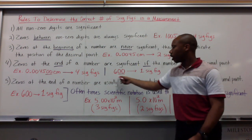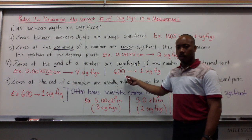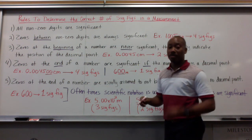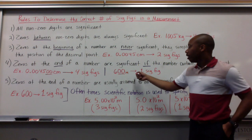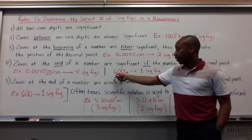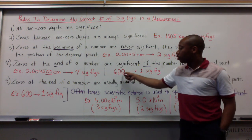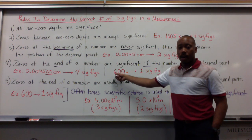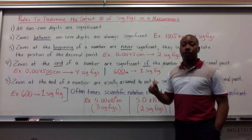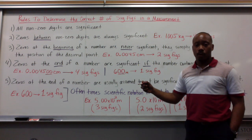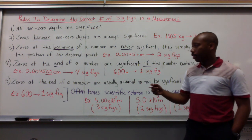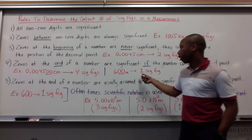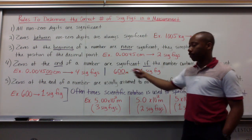Let's look at this example: 600 meters. There's one significant figure here because these two zeros, even though they come after a non-zero digit, they don't come after a decimal point. There's no decimal point, thus these are not significant — so I only have one significant figure.